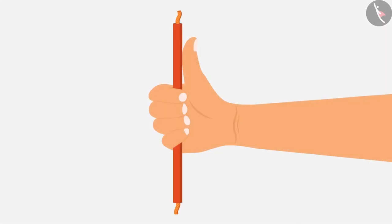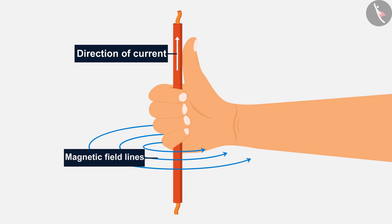This rule states that imagine you are holding a current carrying straight conductor in your right hand such that the thumb points towards the direction of current. Then your fingers will wrap around the conductor in the direction of the field lines of the magnetic field.